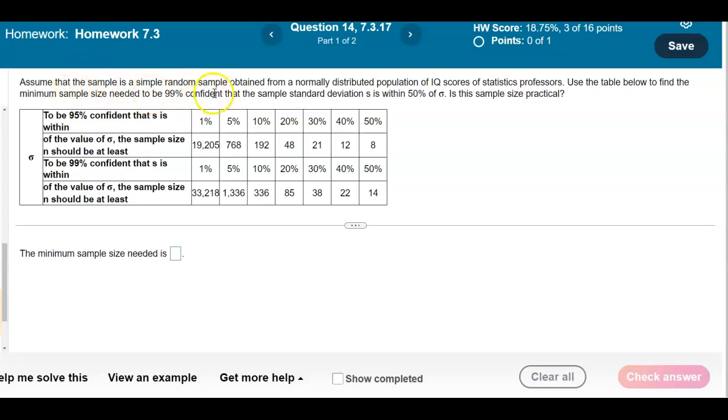Assume that the sample is a simple random sample obtained from a normally distributed population of IQ scores of statistics professors. Use the table below to find the minimum sample size needed to be 99% confident that the sample standard deviation s is within 50% of the population standard deviation. Is this sample size practical?